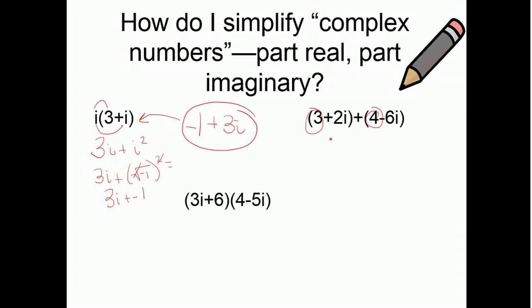3 and 4. 3 plus 4, well, that's just 7. 2i and negative 6i, well, that's negative 4i. I'm done with that problem. I combined my like terms that are with each other. So, the i guys went together and the real part went together.